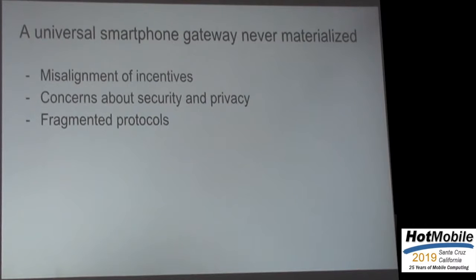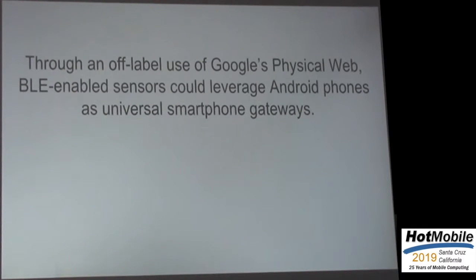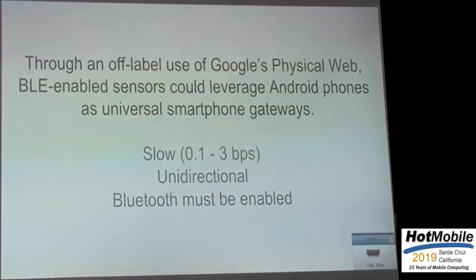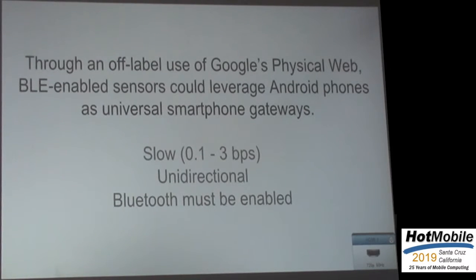Despite all these problems, a few months back we figured out how to leverage Google's Physical Web through an off-label use case, such that BLE-enabled sensors could use anyone's Android smartphone as a gateway. There are some caveats: it's really, really slow, it's unidirectional, and your Bluetooth must be enabled. But literally any Android smartphone could backhaul data from sensors deployed in the physical environment.